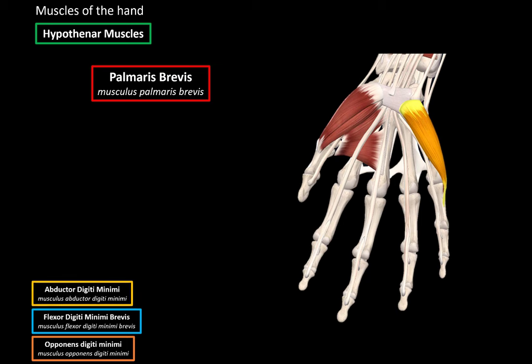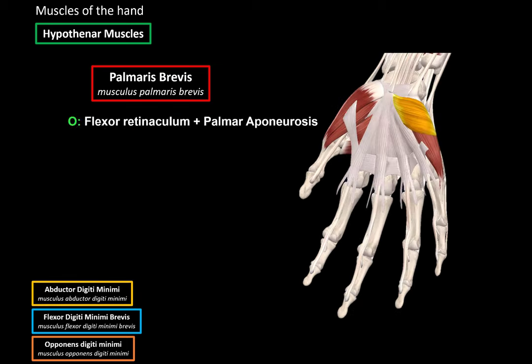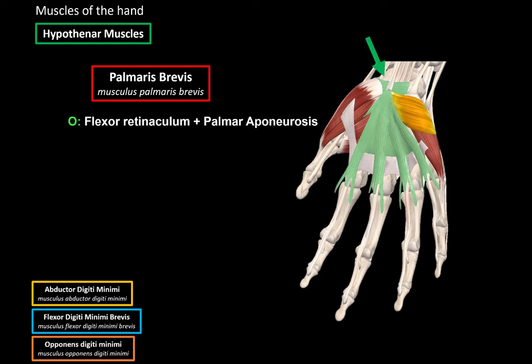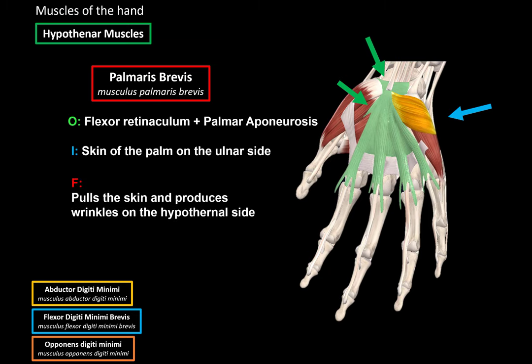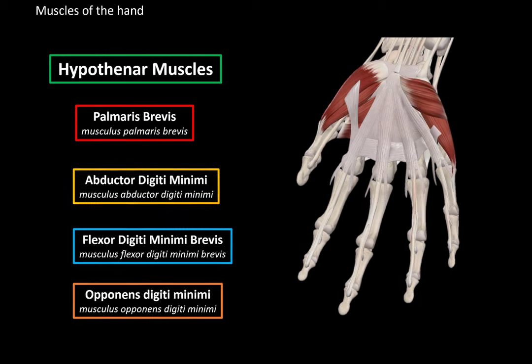The last muscle of the hypothenar region is the Palmaris Brevis. It originates from the Flexor Retinaculum and also from the Palmar Aponeurosis — the structure that the Palmaris Longus inserts on. The Palmar Aponeurosis is primarily a fibrous triangle covering the palm to protect the neurovascular structures underneath it, and it also fuses with the superior palmar fascia at some parts. The Palmaris Brevis inserts at the skin of the palm on the ulnar side. When it contracts, it pulls the skin and produces wrinkles on the hypothenar side, mainly to tense the Palmar Aponeurosis.